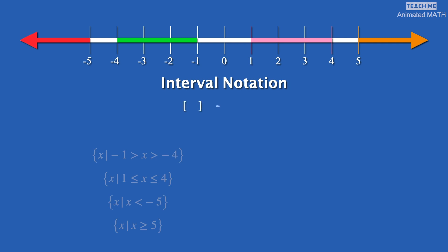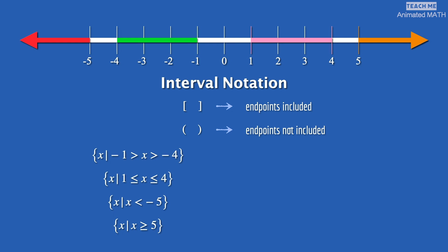We use square brackets when the start or end number is included. We use parentheses when the start or end number is not included. The first interval uses parentheses at the start and end — it covers numbers between negative 4 and negative 1, but negative 4 and negative 1 are not included in the set. The next interval uses square brackets — 1 and 4 are included in this set because of the less than or equal to symbols.